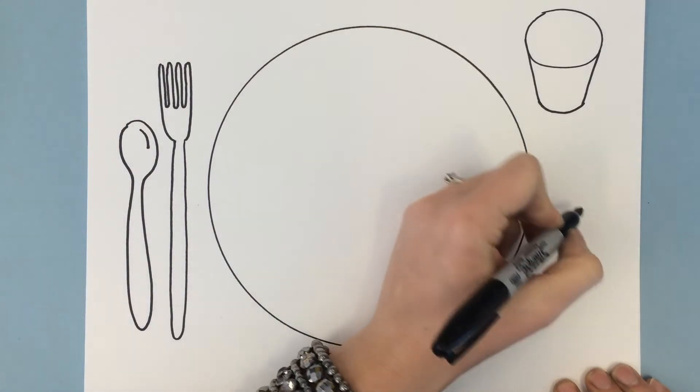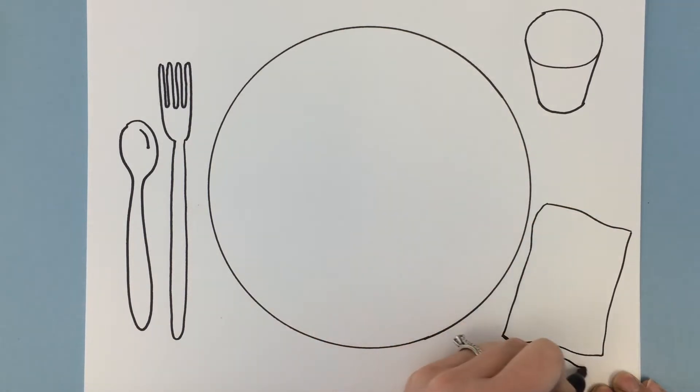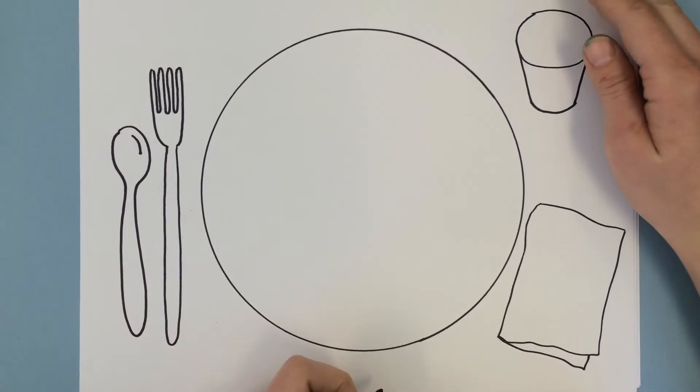I might need a napkin so I'm gonna put a little napkin over here on the side. Just hanging out. It's gonna be folded in half so I can fit it on my paper. Now let me think about some of my favorite foods.